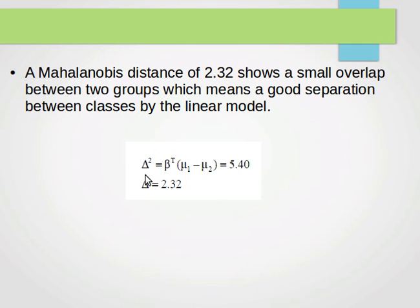Take the square root. The delta now, the Mahalanobis distance, is 2.32. What that means is that distance shows a small overlap between the two groups, which means a good separation between classes by a linear model.